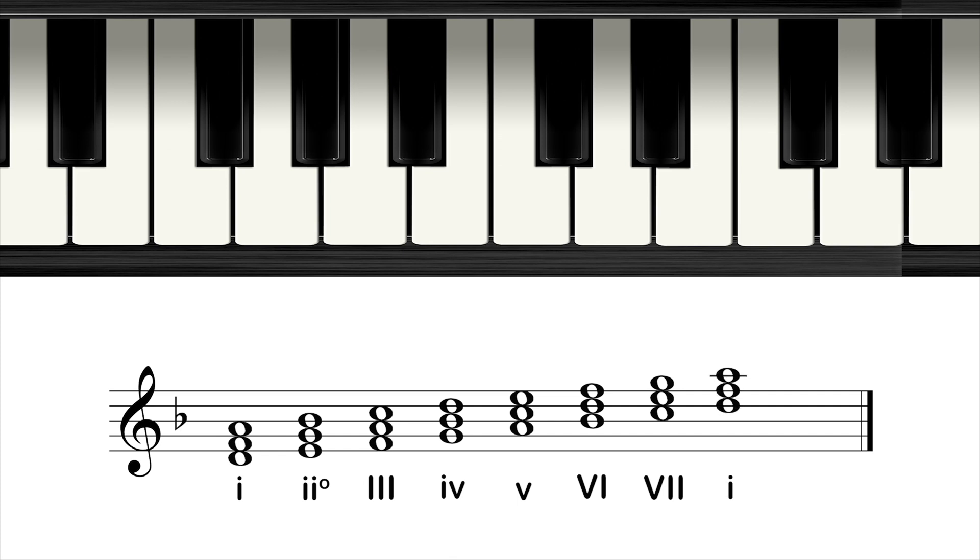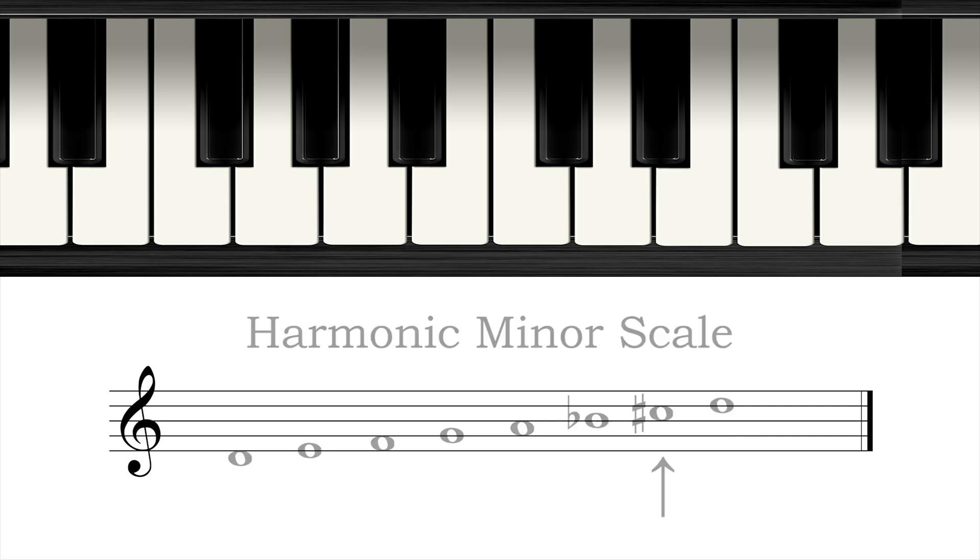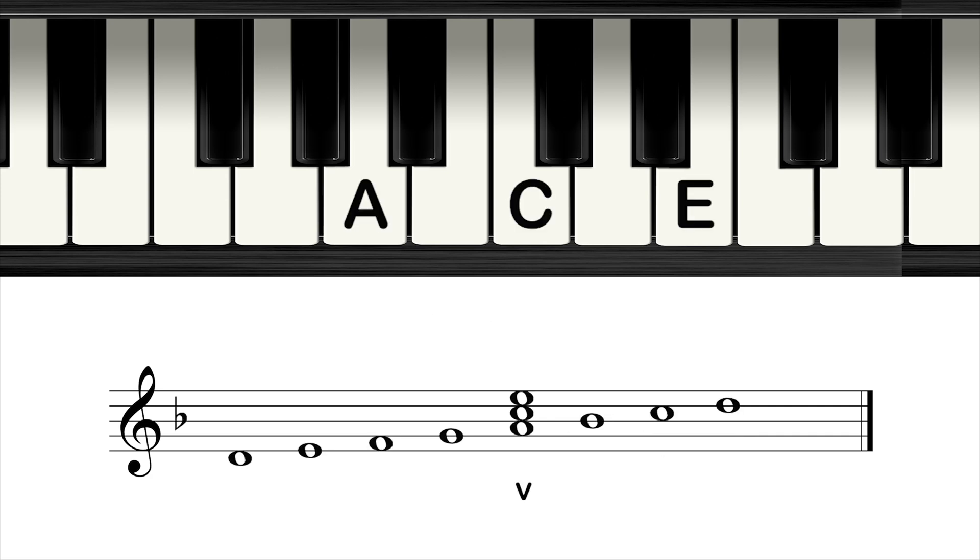In order to have a major five chord, you have to use a harmonic minor scale, which has a raised seventh. For example, in the key of D natural minor, the five chord is an A minor chord. But when the seventh degree is raised from a C natural to a C sharp, the five chord becomes a major triad.